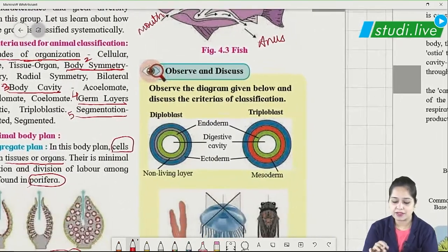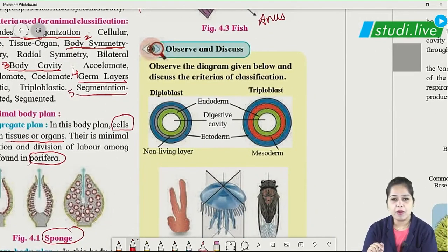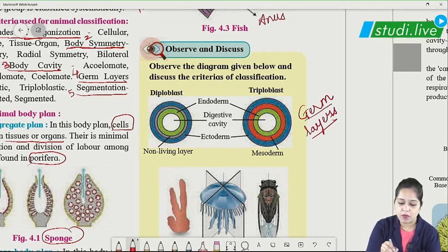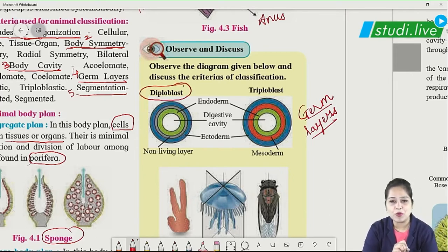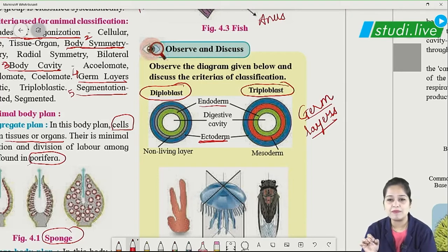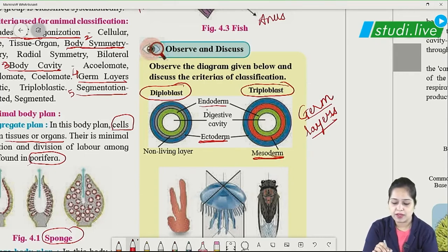Germ layers develop from the zygote during development. If two germinal layers are formed — ectoderm and endoderm — we call it diploblastic. If three germ layers are formed — ectoderm, mesoderm, and endoderm — we call it triploblastic.